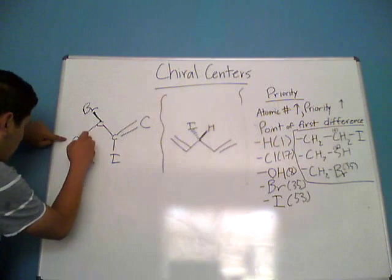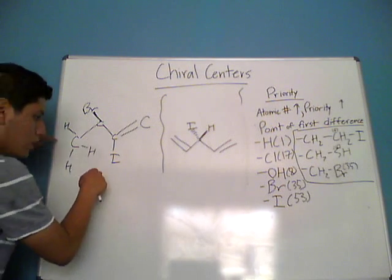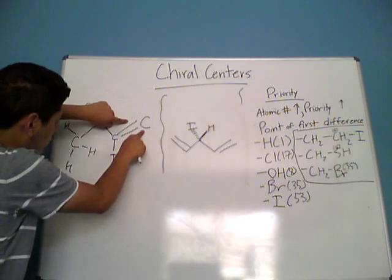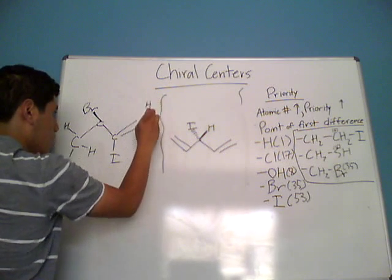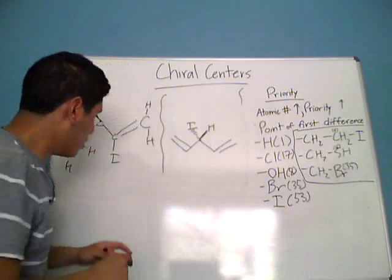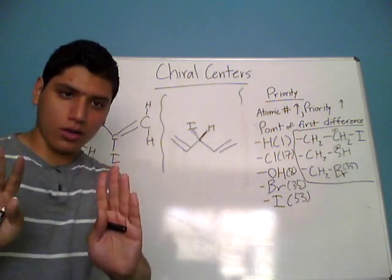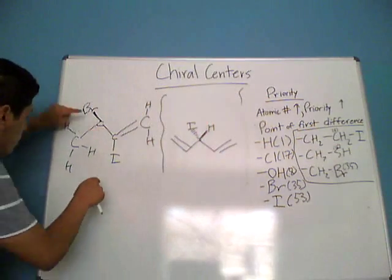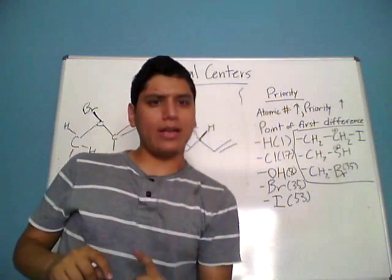Here we have a carbon that's missing three carbon-hydrogen bonds. The next carbon has a double bond, so it's already got two bonds and only needs two more — those two missing bonds are carbon-hydrogen bonds. The carbon after that already has four bonds, so no carbon-hydrogen bonds at all. The last carbon here has three bonds, so its missing bond is a carbon-hydrogen bond.